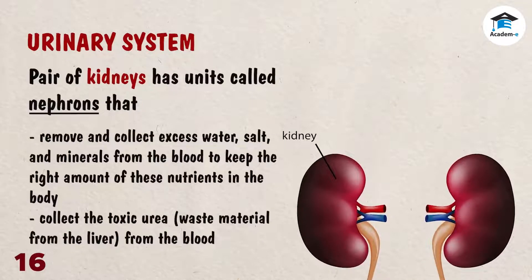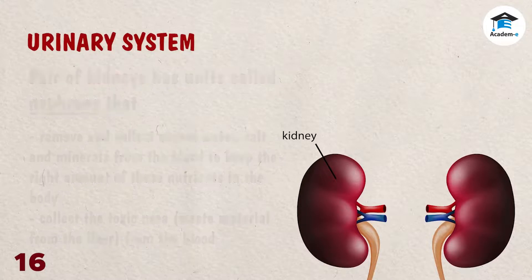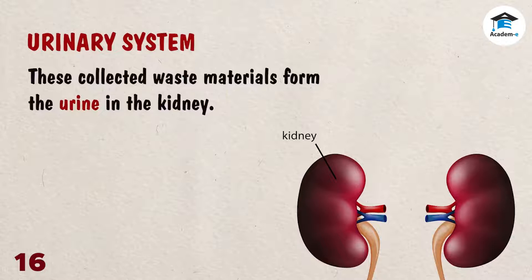The pair of kidneys has units called nephrons that remove and collect excess water, salt, and minerals from the blood to keep the right amount of these nutrients in the body. They also collect the toxic urea — waste material from the liver — from the blood. These collected waste materials form the urine in the kidney.